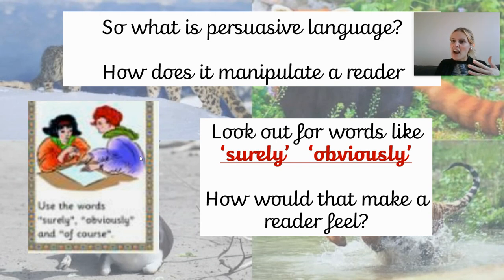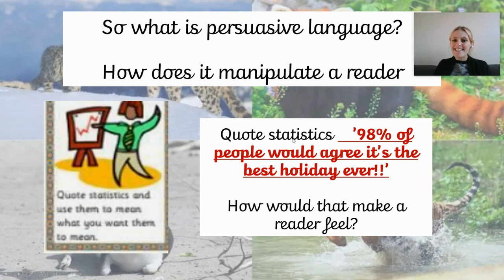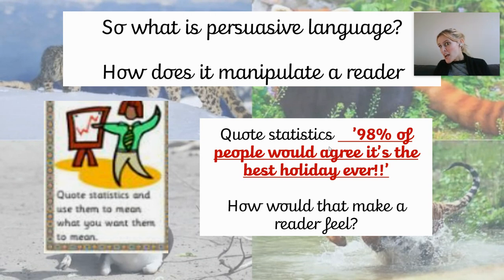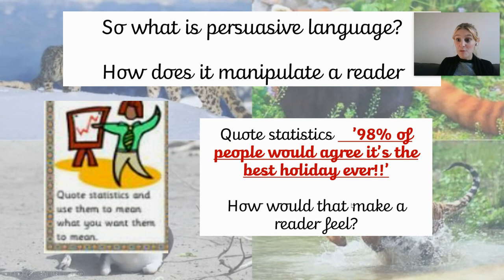'Surely' - it's like a guaranteed thing that's going to be believable. You've also got 'perhaps' and 'maybe.' Even quoting statistics - for example, '98% of people would agree it's the best holiday ever.' A non-fiction persuasive piece might quote statistics, like 'Two million animals have already been destroyed by the rainforest.' How would that make you feel as a reader? If you see real-life true facts, it makes it more believable - you're not just persuading them on something they don't know, you're telling them the facts.